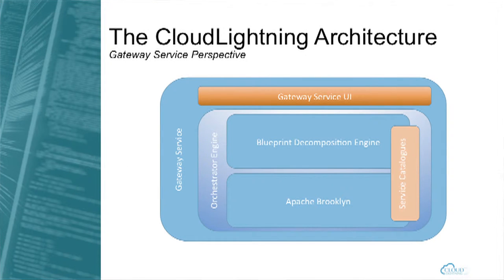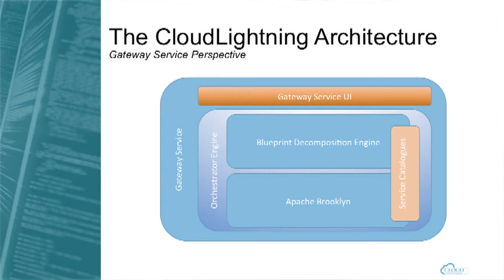What is our perspective on the architecture? This is a simplified view of the Gateway Service. Basically, we are creating an orchestration of services that will interact with the self-organizing system. As part of this orchestration engine, we are aggregating some existing solutions — we are not reinventing the wheel — but using pre-existing software like Apache Brooklyn, which I'm going to discuss in a few slides.